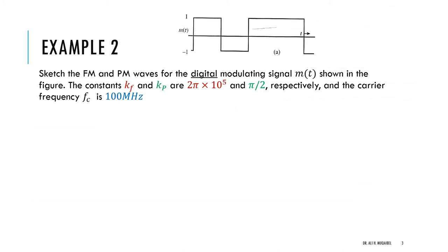In the second example, the message has been changed to a digital signal. This message is very special because when we try to differentiate it we'll get a discontinuity, so we need to learn how to deal with this. The question asks: sketch the FM and PM waves for the digital modulated signal m(t) shown in the figure, with constants kf and kp given and carrier frequency 100 megahertz.